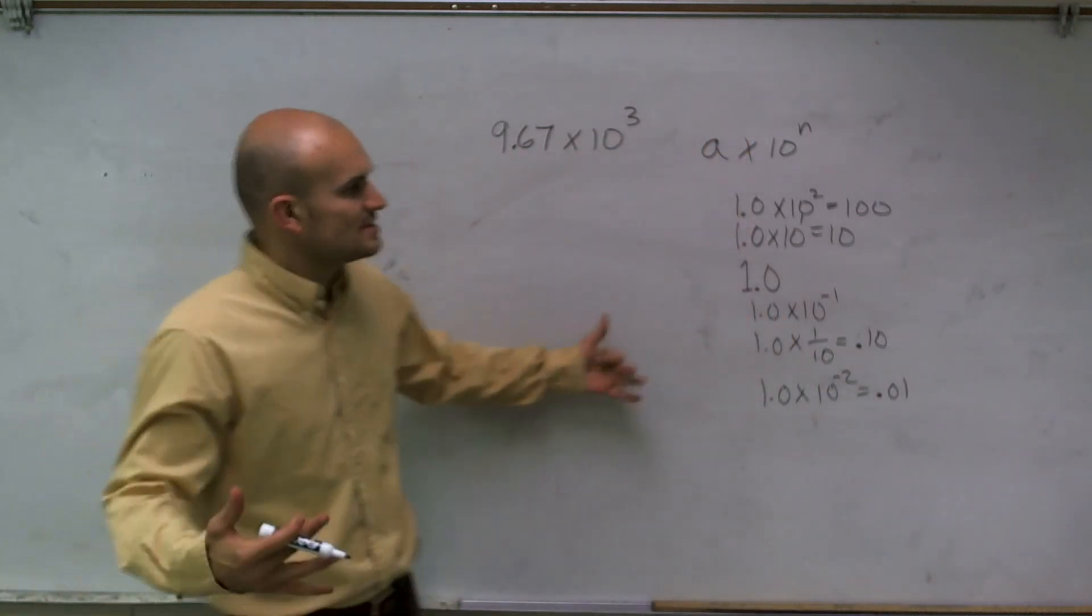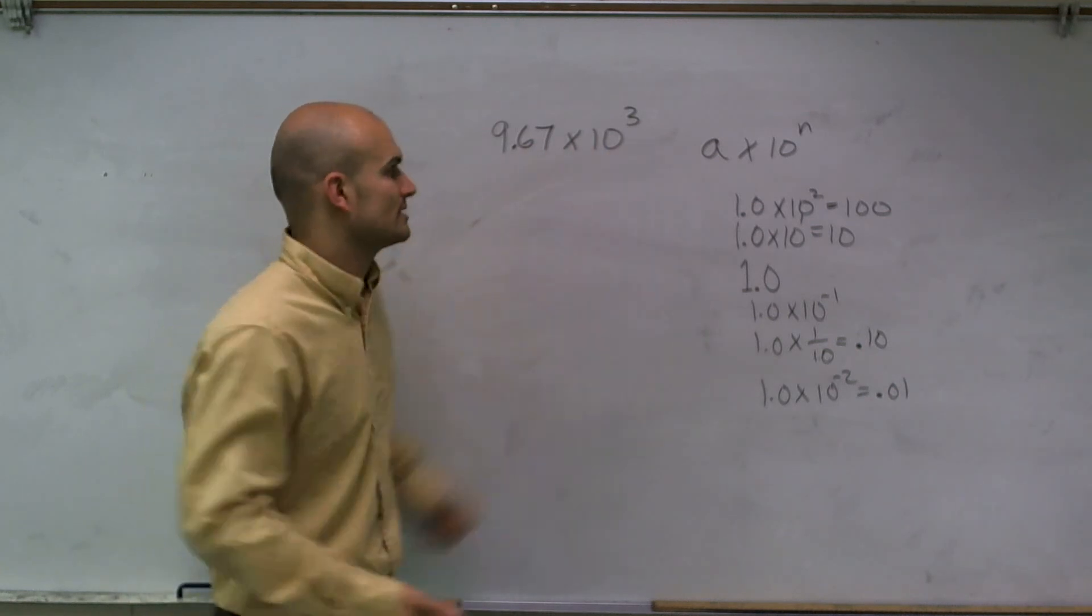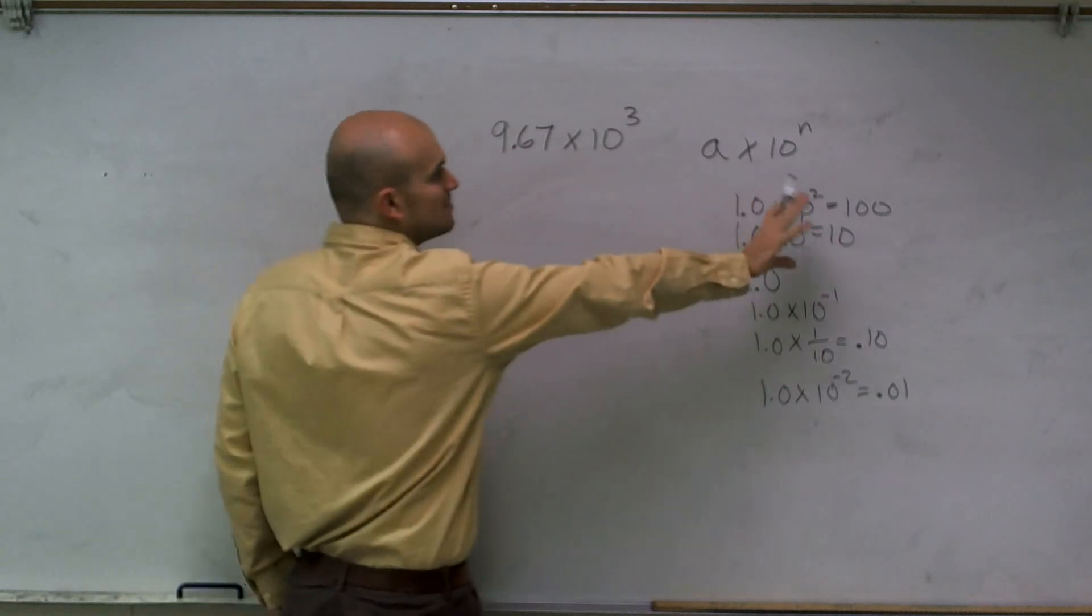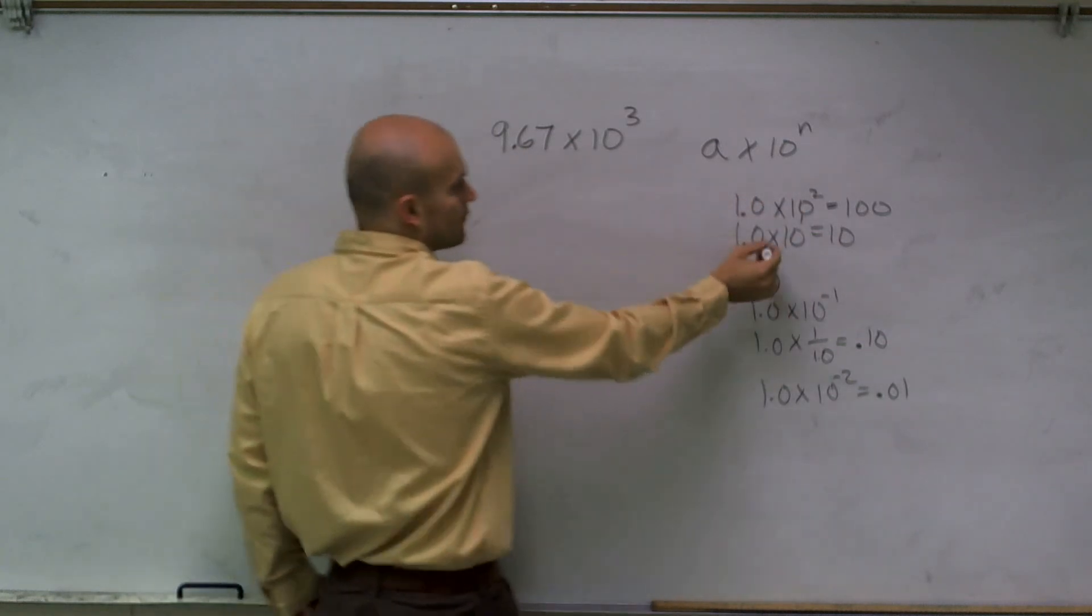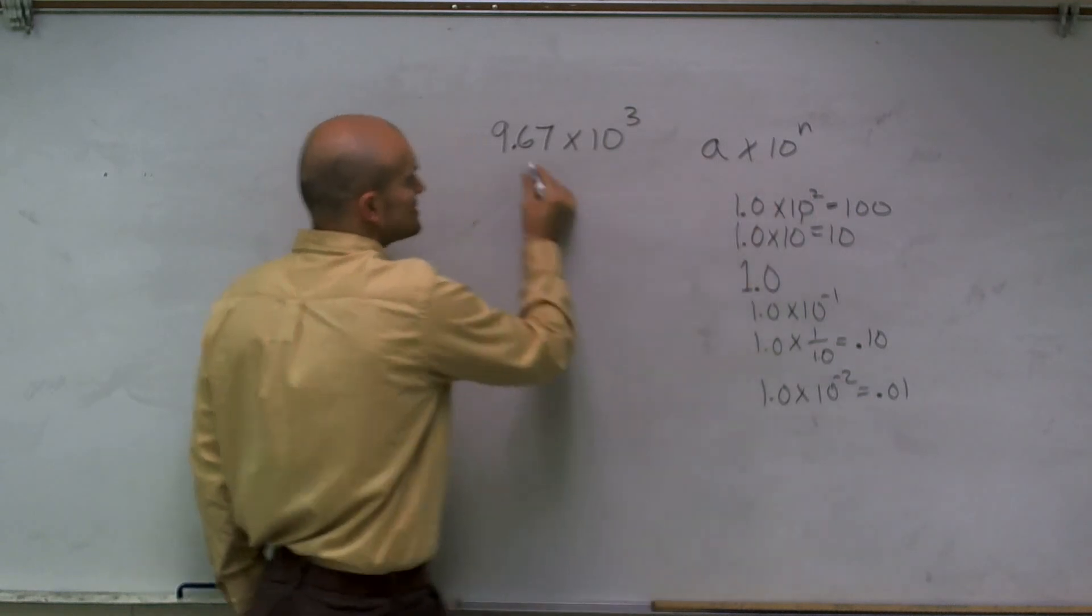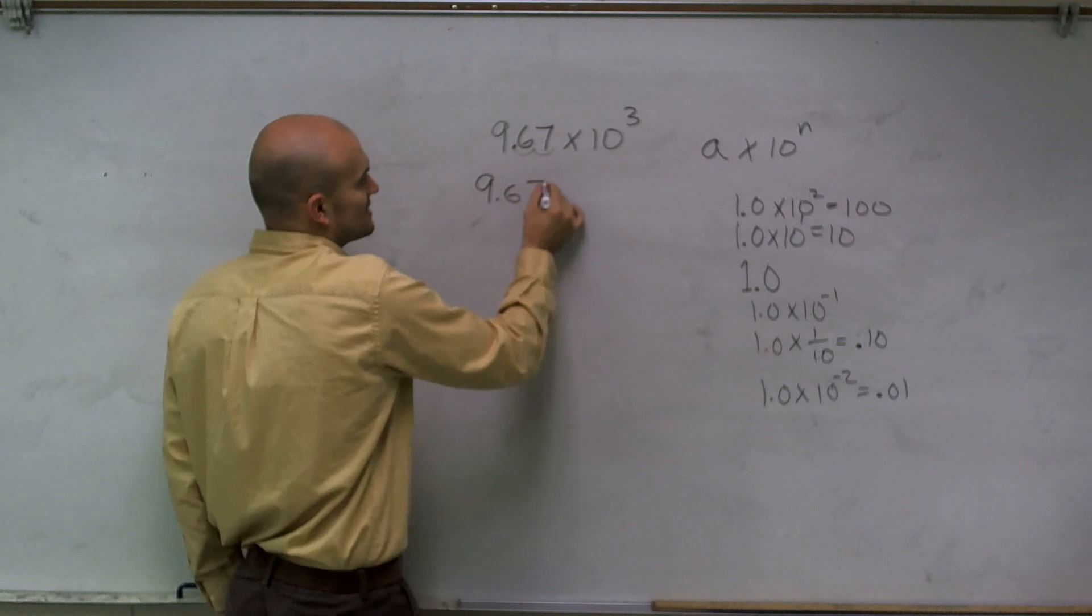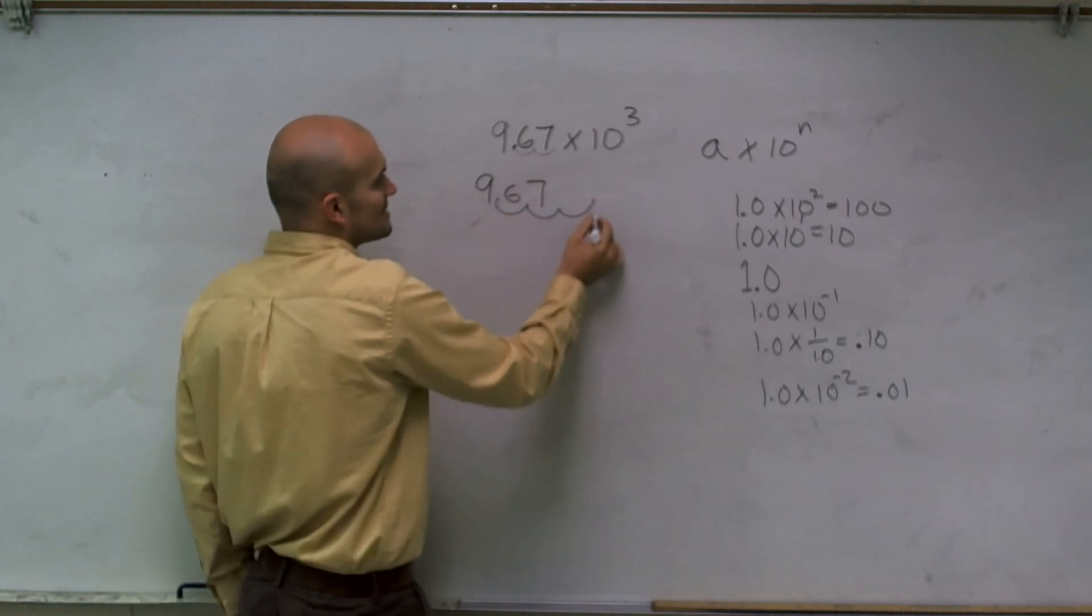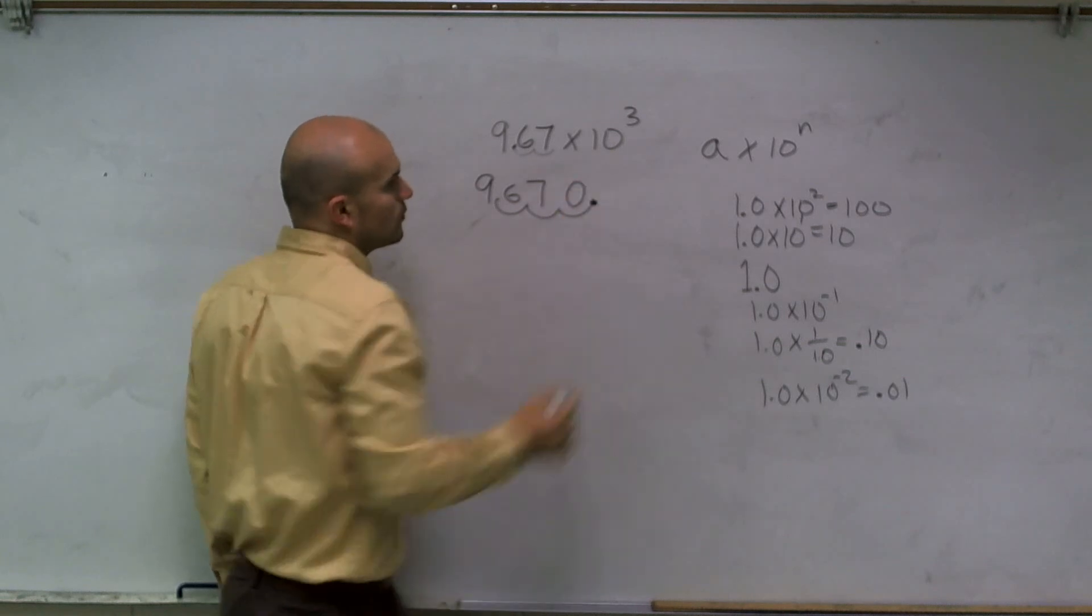So we use this understanding to help us understand where am I going to move the decimal point. Well, since I have this to a positive, I know I'm going to be moving it to the right. And since it's at three units, I'm going to move it over three spots. So I have 9.67. If I move it over three spots, I have an empty spot here.